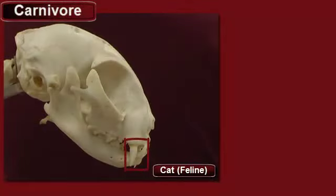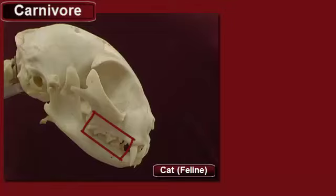They have well-developed canines to grab prey and hold onto them. Carnivores tend to swallow large chunks of meat and chew very little. Their molars and premolars are jagged and are used for tearing instead of grinding.